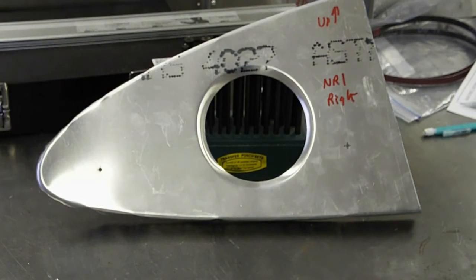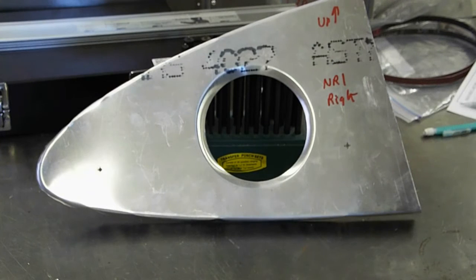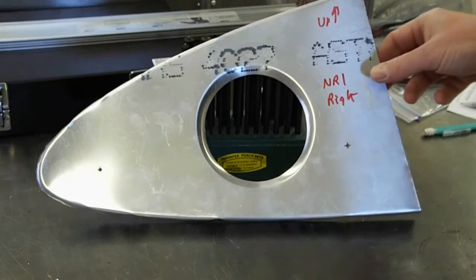Hello, today I'm going to demonstrate making a flange in a rib. I've already done my nose ribs for my Zenith 650, and you can see an example of a pressed flange here.